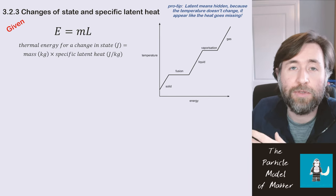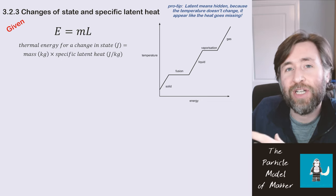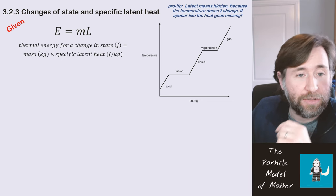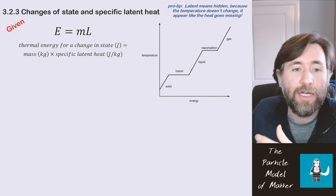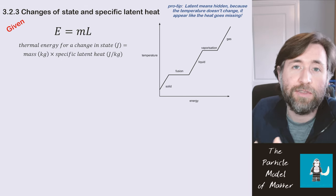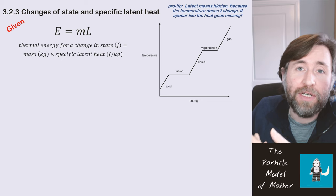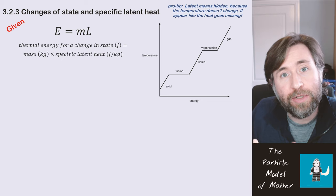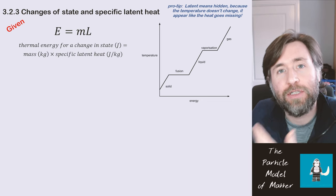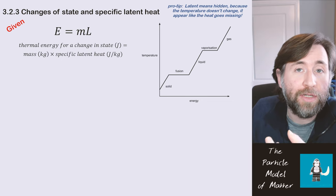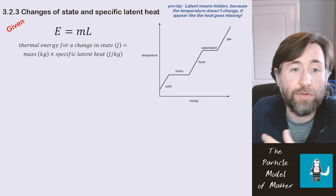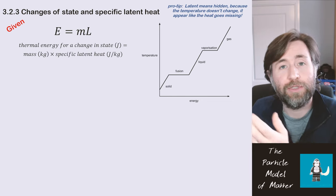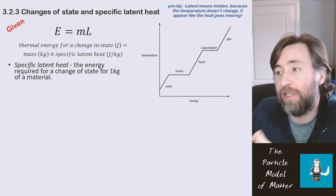You'll probably be used to seeing graphs like this one, where we can have an increase or decrease in temperature within a given state, but when the object is changing state you get a fixed temperature. Following the line up: it starts as a solid, temperature increases until it begins to melt — that's fusion, the change of state between solid and liquid. During that period energy is still being transferred but temperature isn't increasing. Then it becomes a liquid, temperature can rise again, until it starts to evaporate — vaporization, changing from a liquid to a gas.